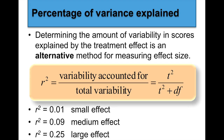To find percentage of variance accounted for, take your t obtained and square it. So if your t obtained is 2, you get 4. Then: t squared divided by (t squared plus degrees of freedom). That gives you a number. If that number is around 0.01, it has a small effect size. If it's around 0.09, it's a medium effect size. If it's around 0.25, it's a large effect size. These aren't strict thresholds — 0.10 would still be medium, 0.08 would also be medium. So 'around 0.09' means medium.